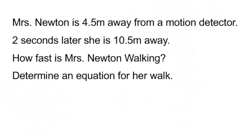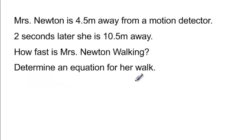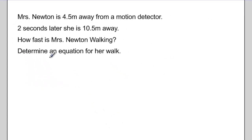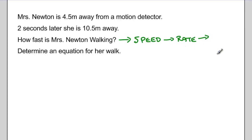For the last example, Ms. Newton is 4.5 meters away from a motion detector. Two seconds later, she is 10.5 meters away. We want to know how fast Ms. Newton is walking and determine an equation for her walk. Look at the word 'fast' — that's a key word meaning speed. Speed is a rate, and it's distance over time. If speed is a rate, it's just a slope.